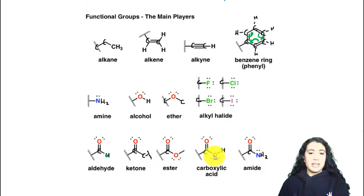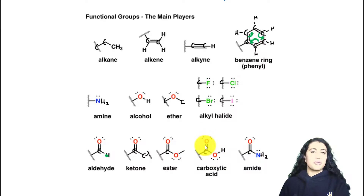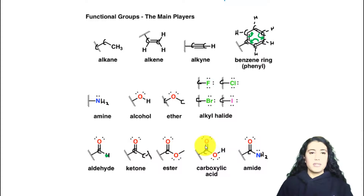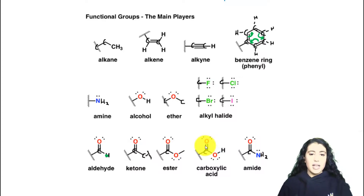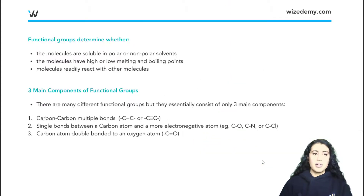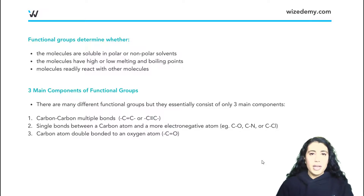We call this a carboxylic acid — a way to remember it is that it's a little bit acidic because it has this proton connected to the oxygen, and this group is polar. For now we're just trying to get ourselves familiar with all the different functional groups — we'll look into them in a lot more detail. We also talked about the amide being the one with a carbonyl group bound to a nitrogen.